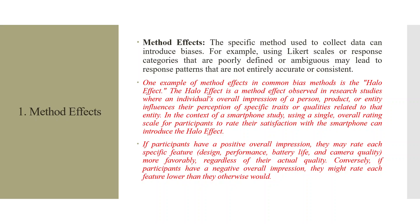In the context of a smartphone study, using a single overall rating scale for participants to rate their satisfaction with the smartphone can introduce the halo effect. If a participant has a positive overall impression of the smartphone, they may rate each specific feature — design, performance, battery life, and camera quality — more favorably, regardless of their actual quality. Conversely, if they have a negative overall impression, they may rate each feature lower than they otherwise would have.